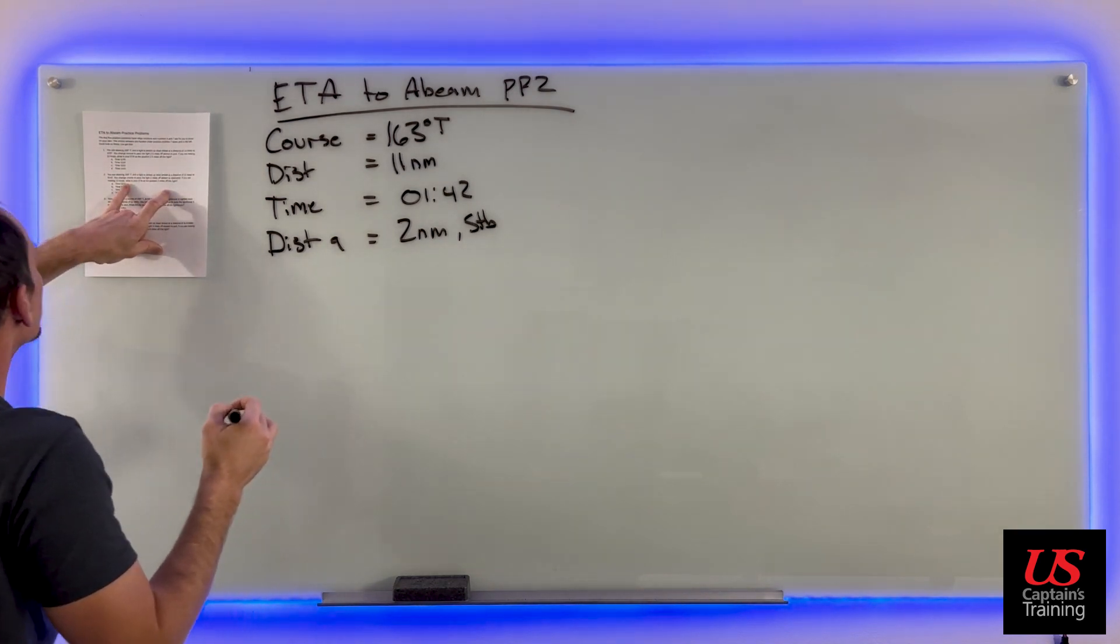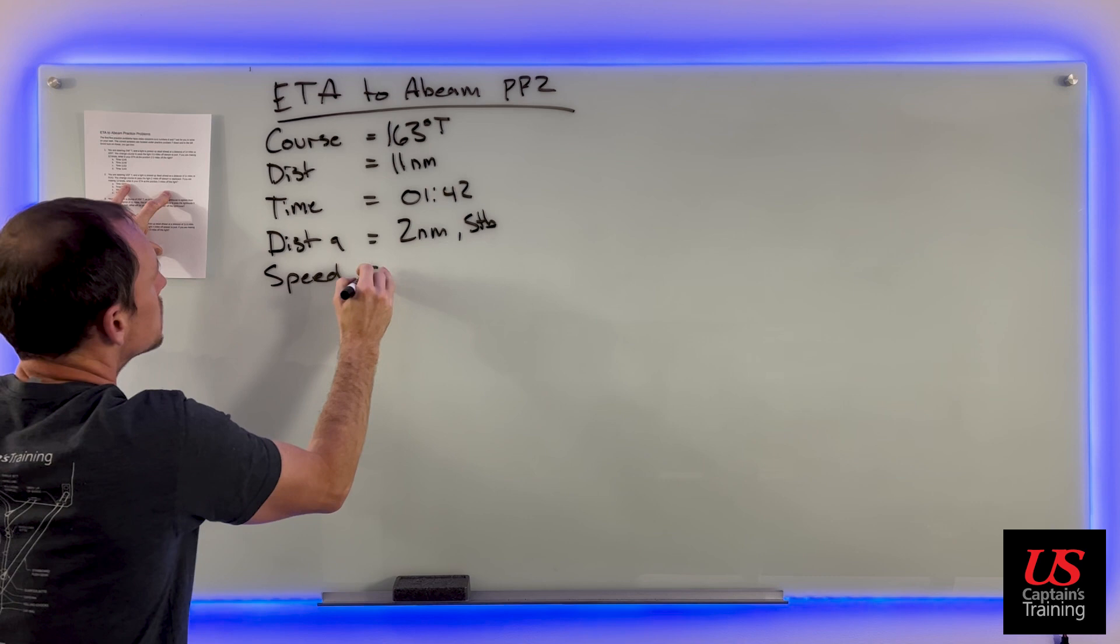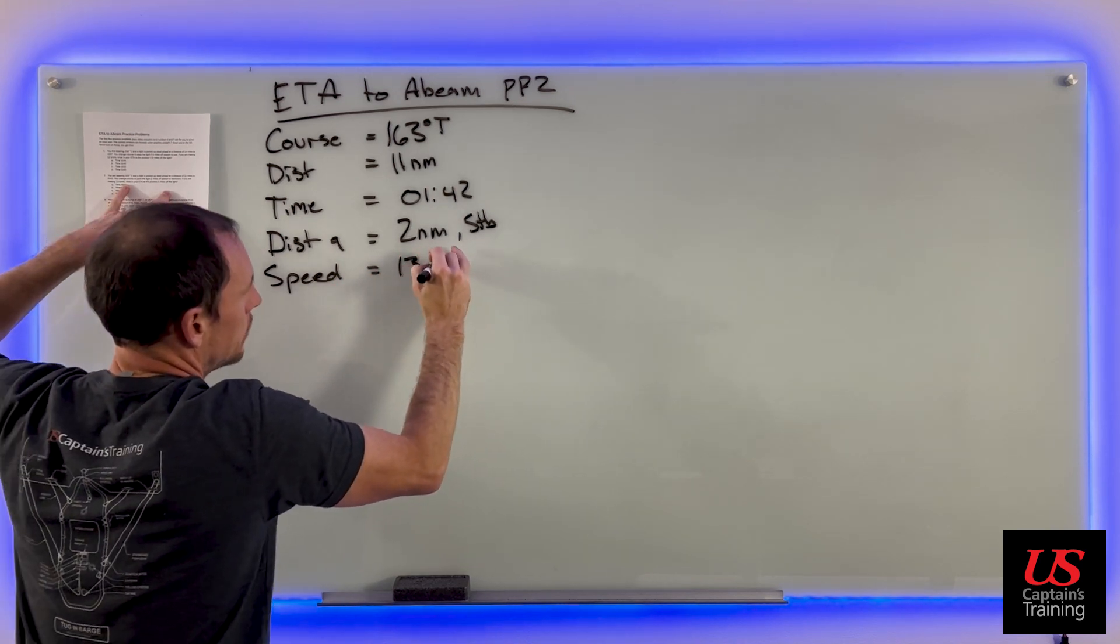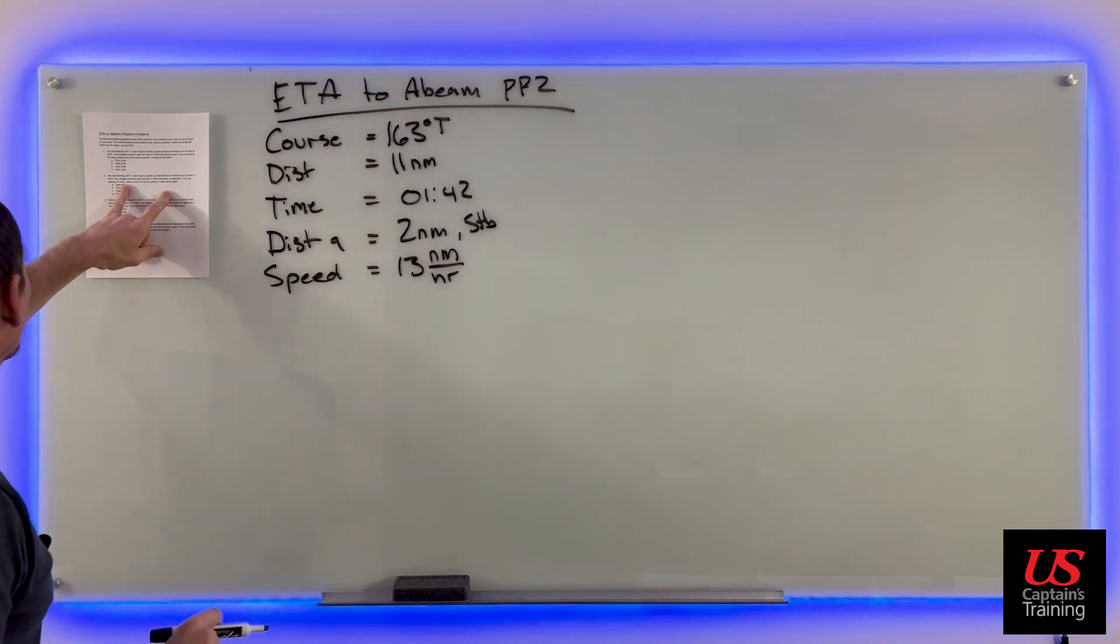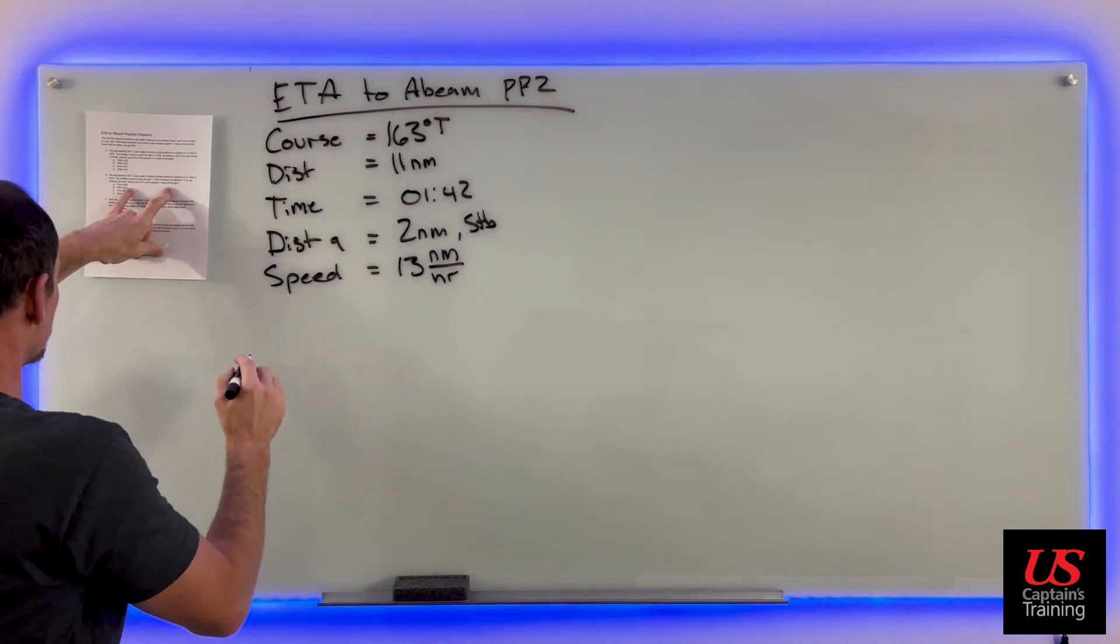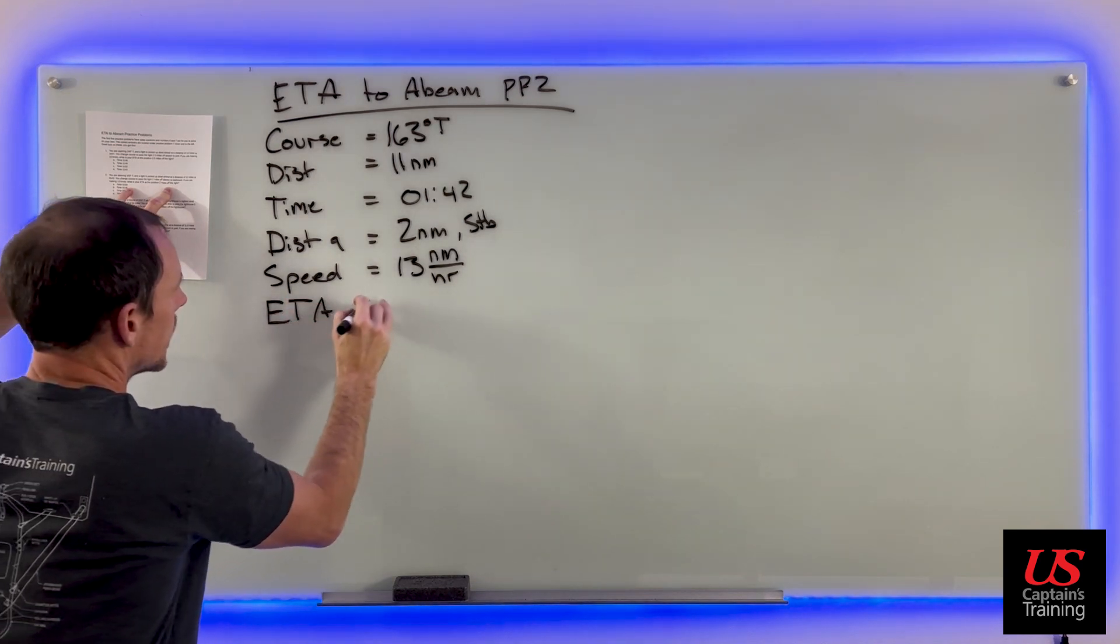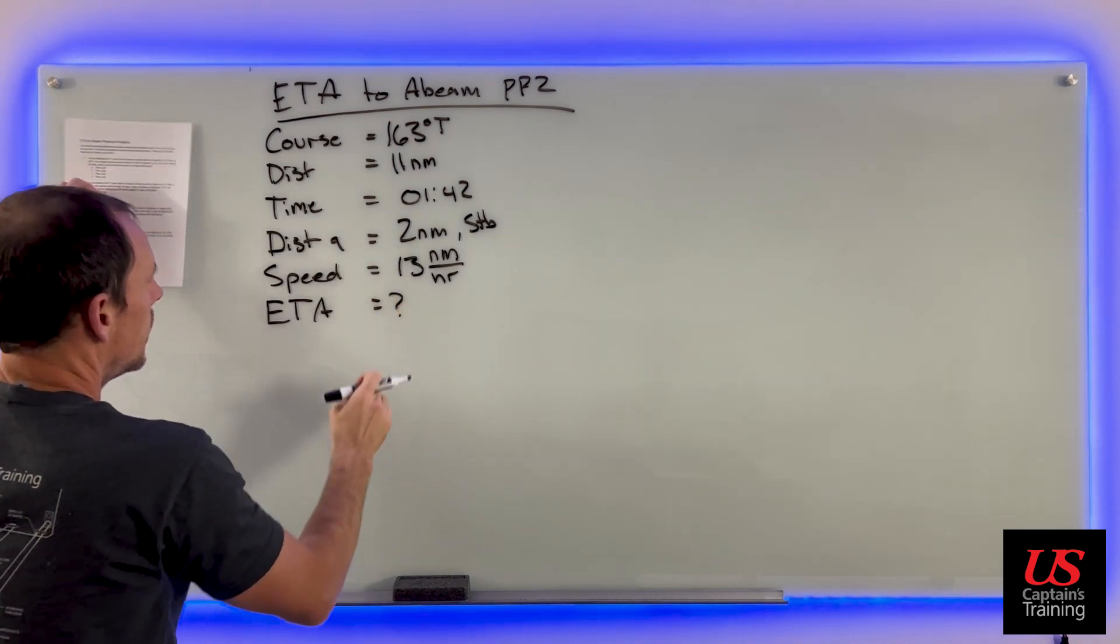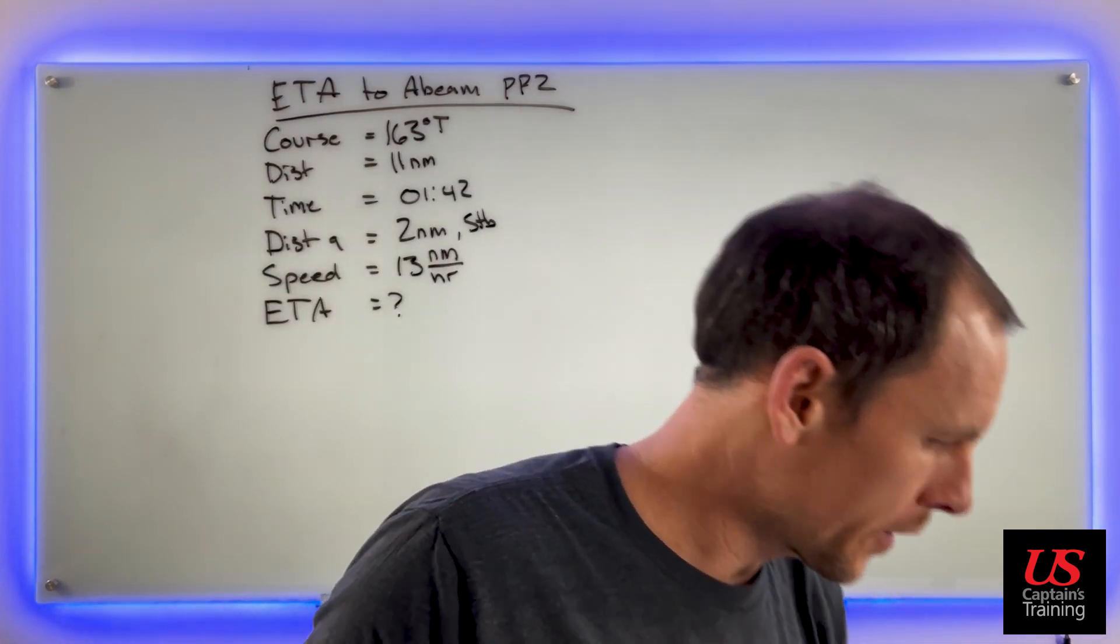If you're making 13 knots, what's your ETA at the position two miles? It gave us our speed - speed equals 13 knots. What's a knot? It's a nautical mile per hour. We can keep our units straight if we write it out. The question is: what is your ETA at the position two miles off the light? That's what we're looking for.